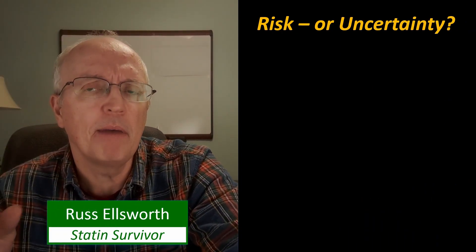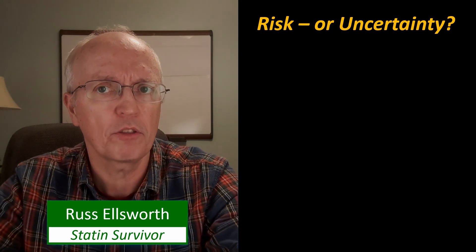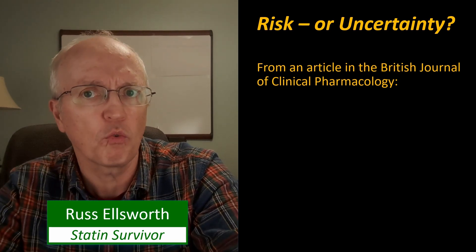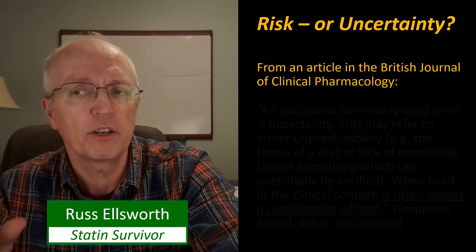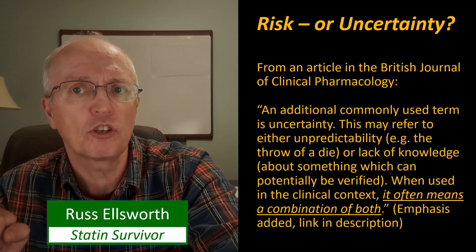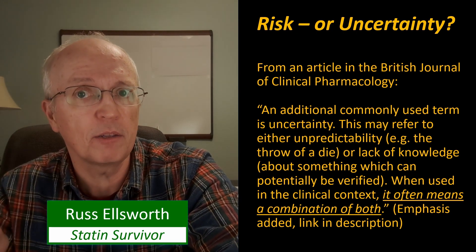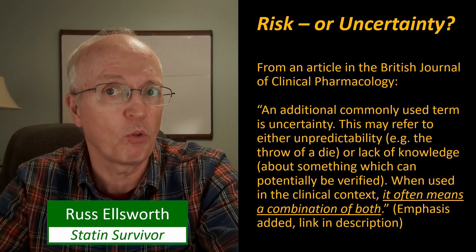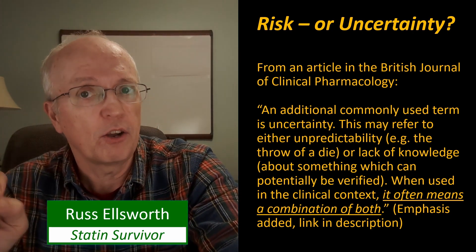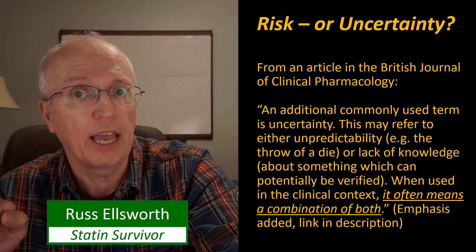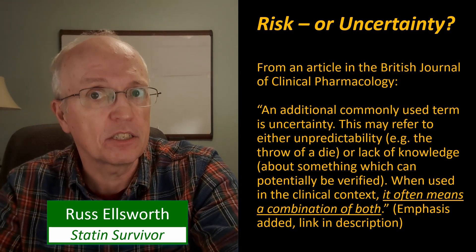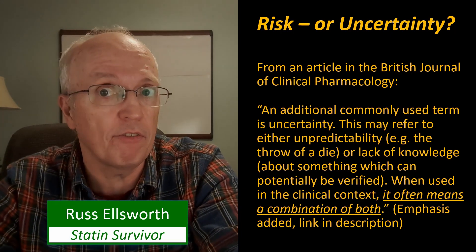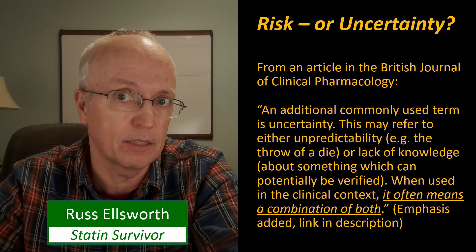To make sure that the medical community made this distinction, I went looking through some medical journals and came across an article in the British Journal of Clinical Pharmacology. They say: an additional commonly used term is uncertainty. This may refer to either unpredictability — for example, the roll of a die, still rolling and not stopped yet — or lack of knowledge about something which potentially can be verified. That's the dice that has stopped. I put my hand over it; we could lift it up and say, yeah, it's a 4, or it's not a 4.